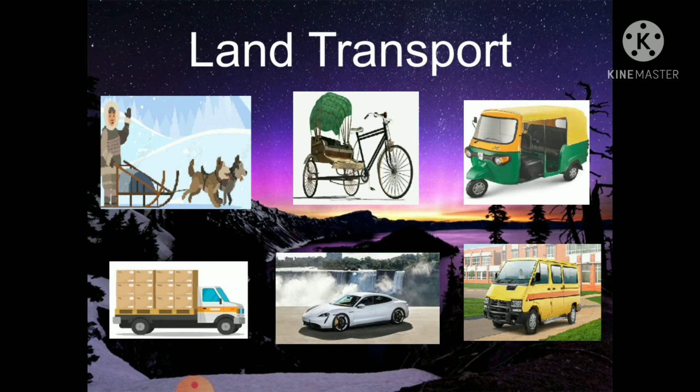If we have to visit our relatives or friends, go to work, or go shopping, we mostly use rickshaws, cars, buses, autos, etc. If we plan a trip to a nearby town, we use a bus, car or train. Trucks, cars and trains run on land and are used to carry people and goods. Land transport is the most common mode of transport used by us.